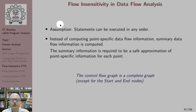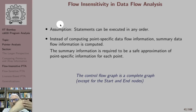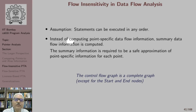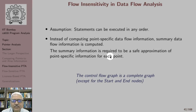If there are statements 1, 2, 3, 4, we are not necessarily assuming that 2 is executed after 1 and 3 is executed after 2. We might as well assume that 3 is first executed, then 1, then 2, or that 3 is first executed, then 2, then 1. Instead of computing point-specific information, a summary data flow information is computed, and the most important requirement is that this summary information is a safe approximation of the point-specific information at each point.